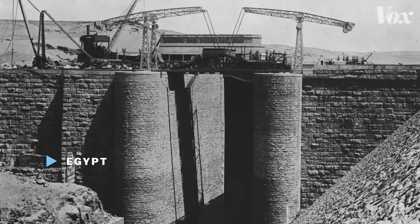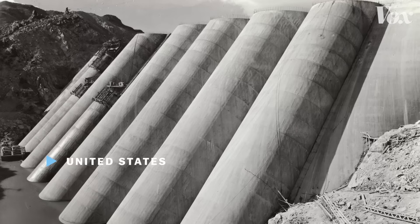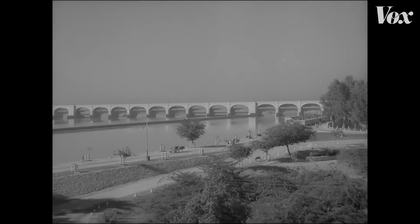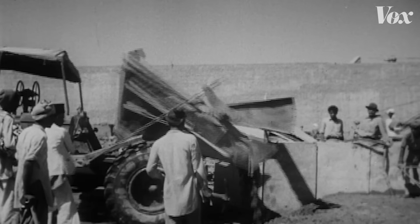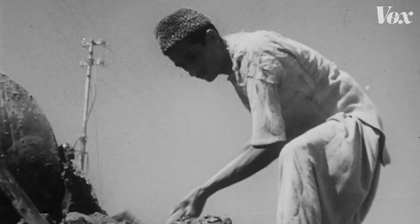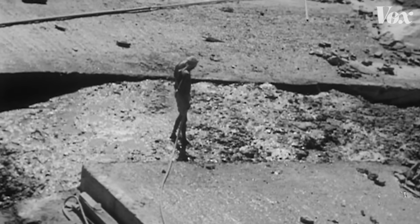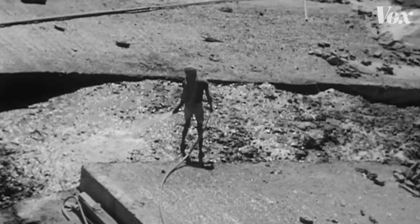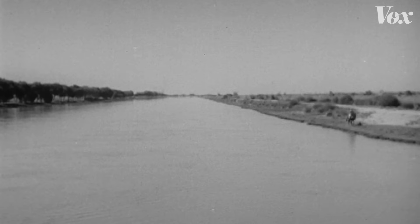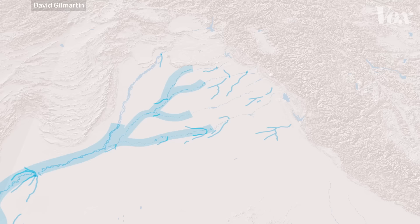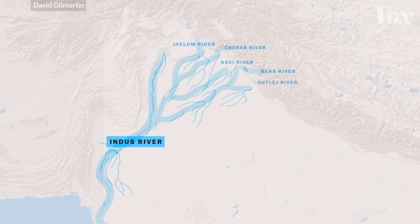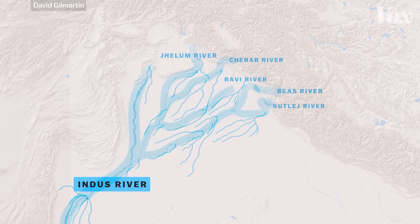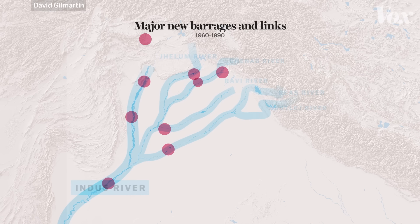There's nothing unique about engineering rivers for irrigation — countries everywhere do that. But the scale of this region's canals sets it apart. By 1947, at the end of British rule, the canal system had grown into a large network that turned roughly 26 million acres of land in the basin into farmland. After Pakistan won independence, the government continued this legacy, adding at least 18 new major barrages and canal links between 1960 and 1990.